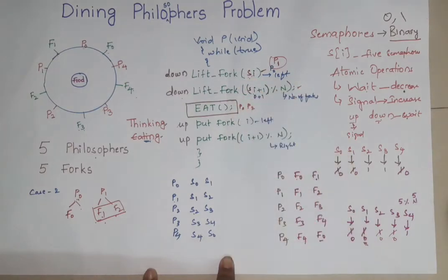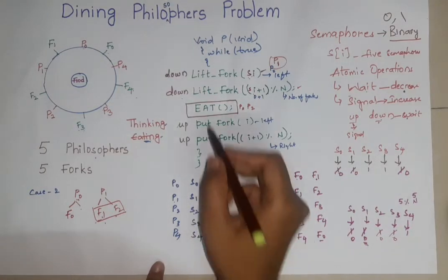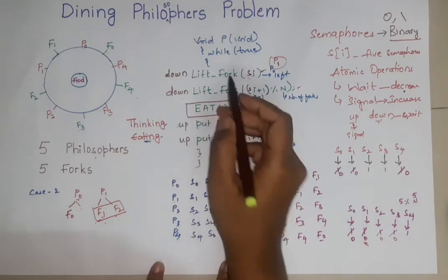There is a deadlock in this section. What is the deadlock means? P0 has executed one line of code, only one line of code.